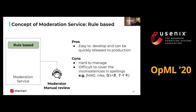I'll explain the history of content moderation at Mercari. First, as content moderation, we implemented rule-based logic. The pros of rule-based are that it's easy to develop and can be quickly released to production. The cons are that rule management grows day by day, and after a certain time, maintaining it is very high cost and difficult. Also, rule-based approaches are difficult to cover inconsistencies in spellings — for instance, capital 'NIKE', 'Nike', Japanese Katakana Nike, or Japanese Hiragana Nike. This happens not only in Japanese but also in English environments.